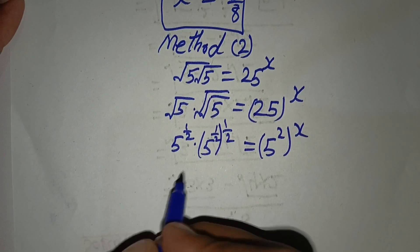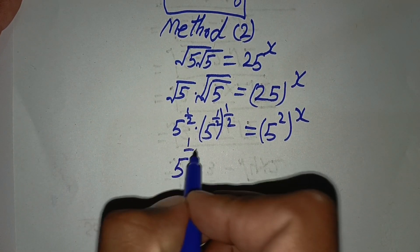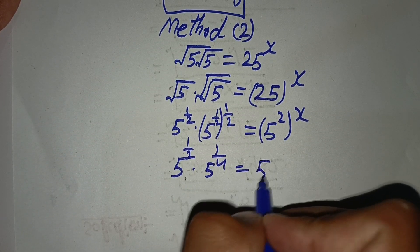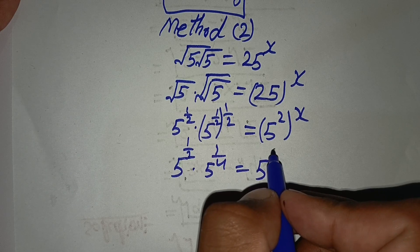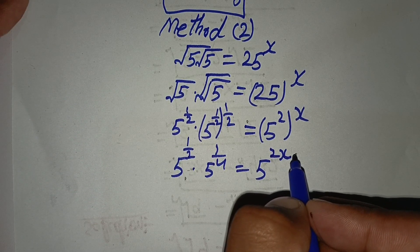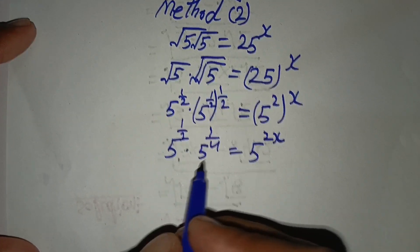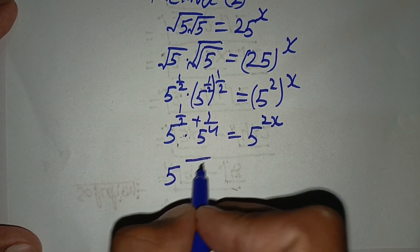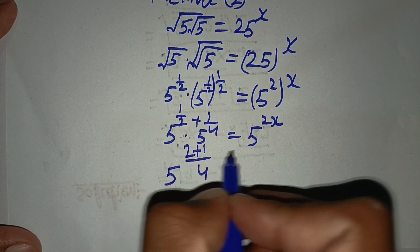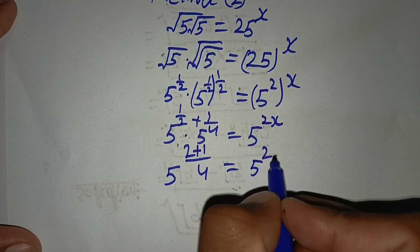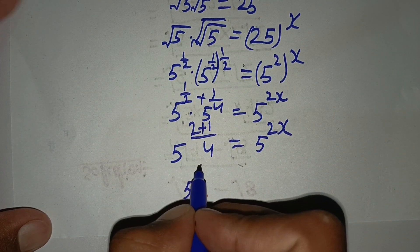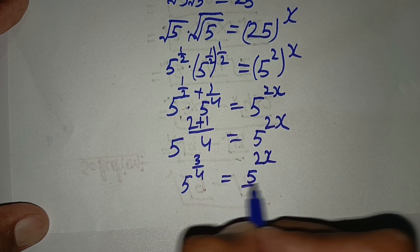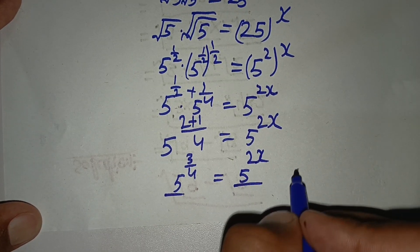So we have 5 power 1 by 2 times 5 power 1 by 4 equal to — whenever you have power to power, multiply their powers — 5 power 2x. Bases are same, so we add their powers. The LCM is 4, so 2 plus 1 over 4 equals 5 power 2x, giving 5 power 3 by 4 equals 5 power 2x. Bases are same so their powers become equal.